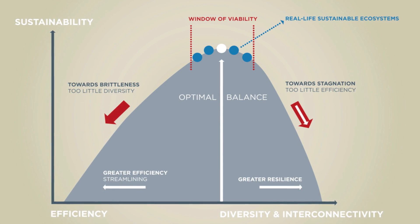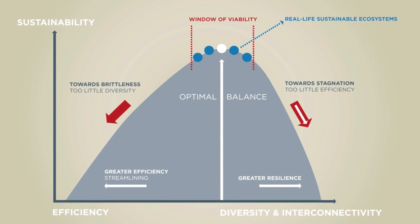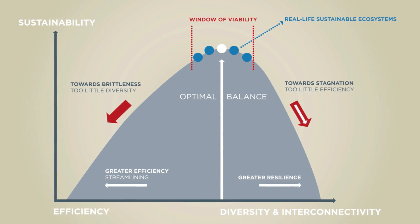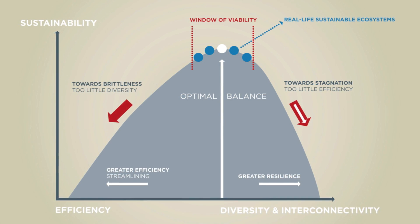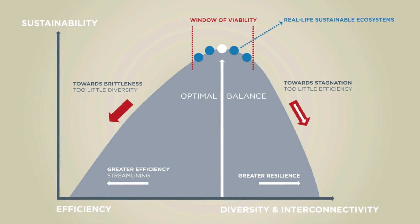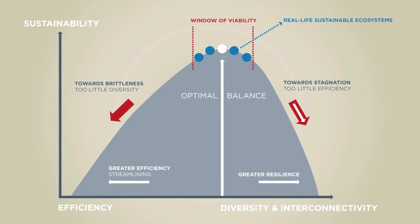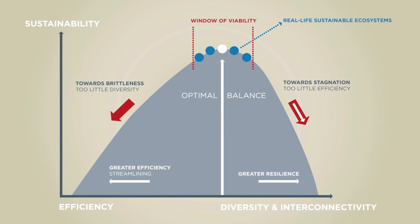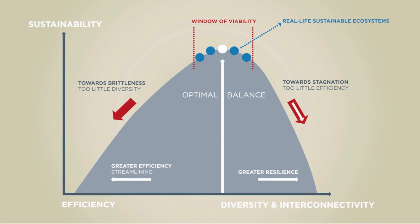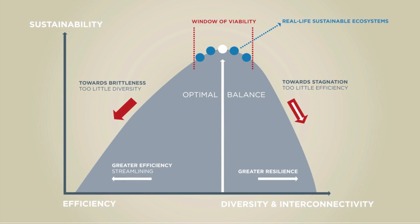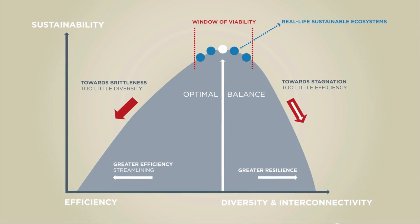We have to look at balancing efficiency with effectiveness. If a system becomes too diverse, it may be that in a supply chain this is too costly, too slow and cumbersome. Whereas if it's too efficient, it may become too brittle. So here we're looking at optimising the system as a whole.